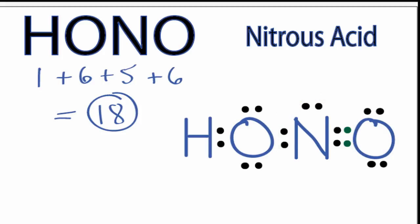So we've completed the outer shells for all the atoms in the HONO Lewis structure, and we've used only the 18 valence electrons that we started with. You might ask why I didn't take the valence electrons from the other oxygen to form a double bond.